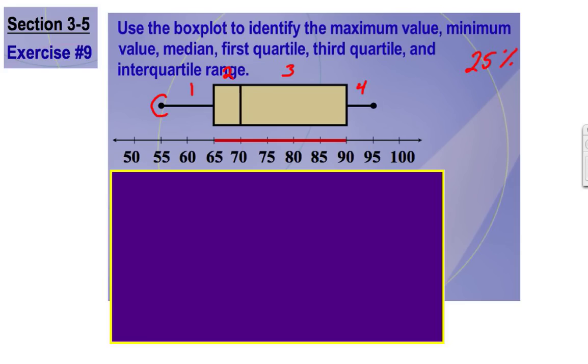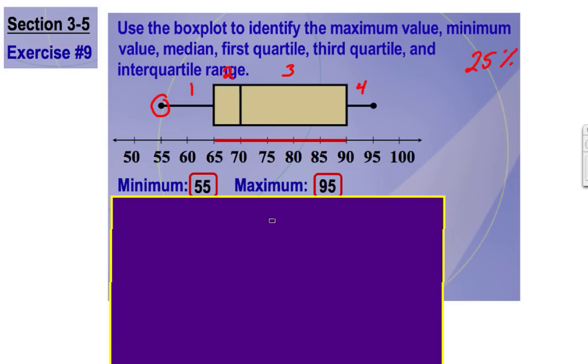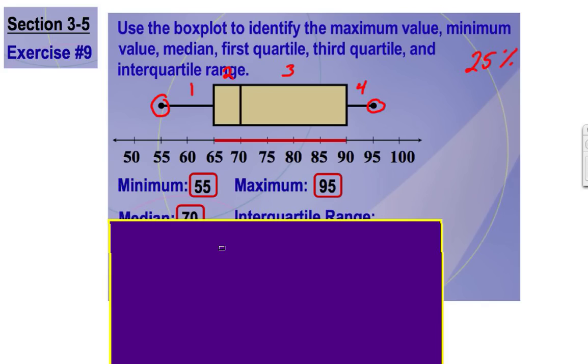Our data starts off at a minimum value. In this case right here, our minimum value is going to be 55, whereas our maximum value is going to be 95. So we have between 55 and 95, we have four quarters of data. And that data is evenly dispersed.